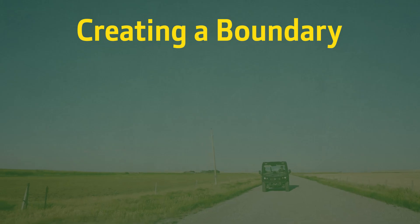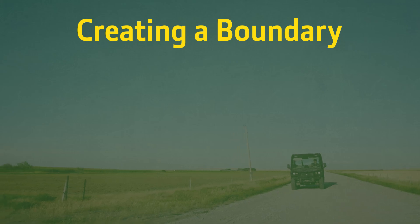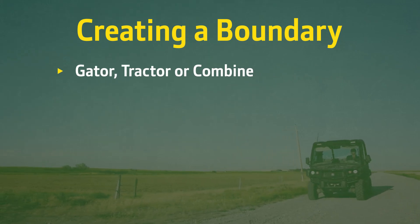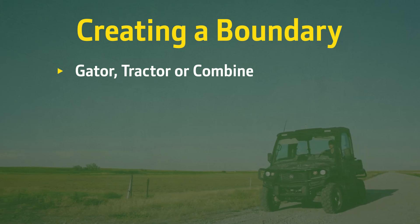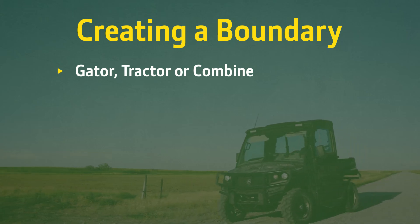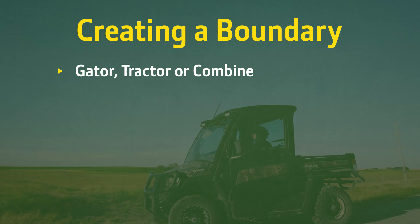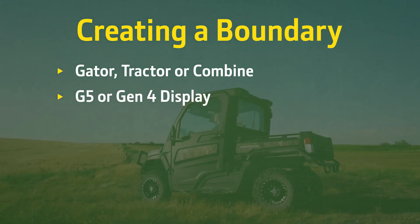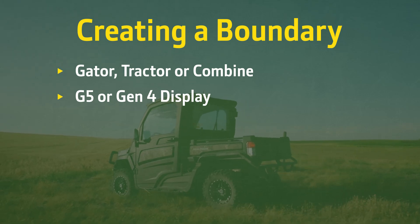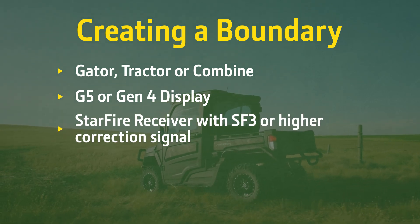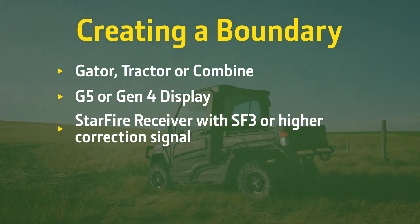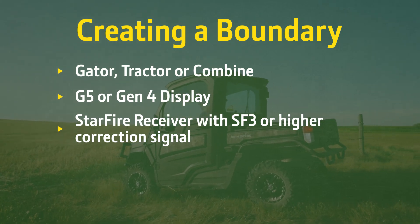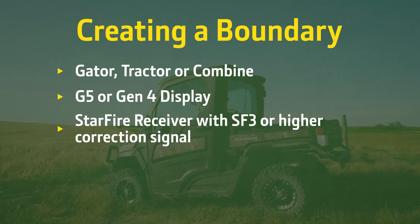There are five key hardware and software components that we both require and recommend to get started. First, a Gator or a John Deere tractor is recommended to drive a boundary; however, you can use your John Deere combine as well. You will also need a G5 or Gen4 display with core automation software capabilities, and a Starfire receiver with SF3 or higher correction signal. Note that GPS accuracy must be at least 90% to begin recording a driven boundary.